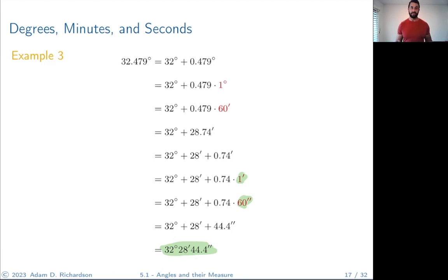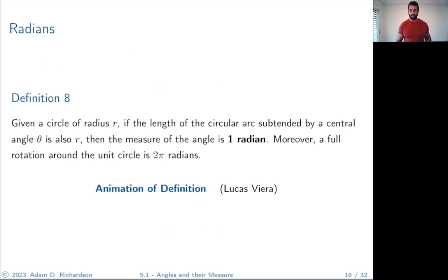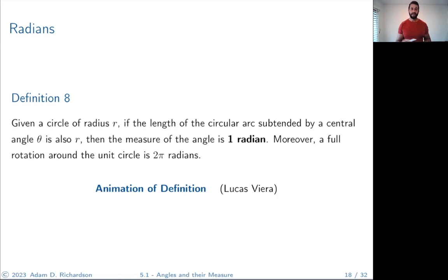Now let's change pace and talk about radians. Radians are very cool, extraordinarily helpful, and superior to degrees in almost every way. The written definition is hard to wrap your head around, so I have a really good animation. This is an idea you want to make deep sense of. Let me read the definition: if we're given a circle of radius r and the length of the circular arc subtended by a central angle theta is also r, then the measure of the angle is one radian. A full rotation around the unit circle is then 2π radians.